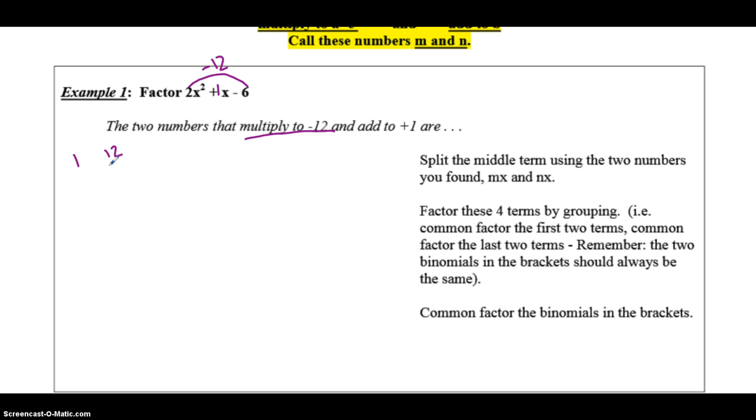And just like with our simple, they have to add to that middle number. So, we've got to figure out those numbers. So, negative 12, we've got 1 and 12, 2 and 6, or 3 and 4 as our factors of 12. One has to be negative, the other will be positive, but they have to add to positive 1. So, this is going to be the combo. Those two numbers are going to be negative 3 and 4.